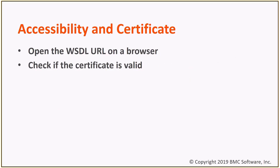We need to make sure that we are able to access the WSDL of the web service from two locations: one is the Developer Studio machine, and the other one is the AR Server machine. You can simply use a browser to access those URLs, but if other tools are available such as curl or wget, they can also be used. Once you can access the WSDLs, please use a tool to verify the validity of the certificate.